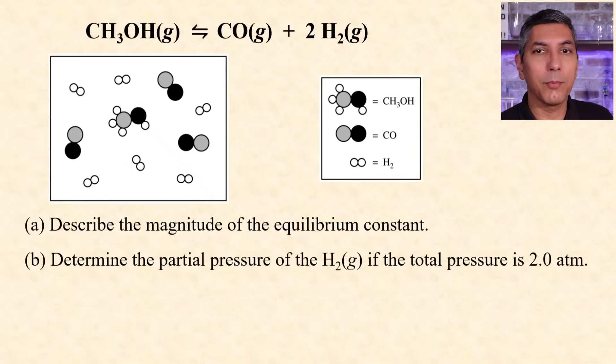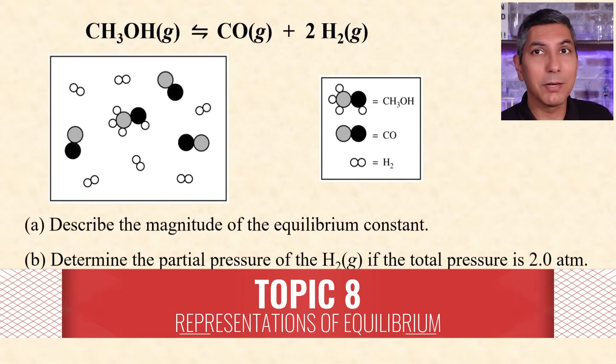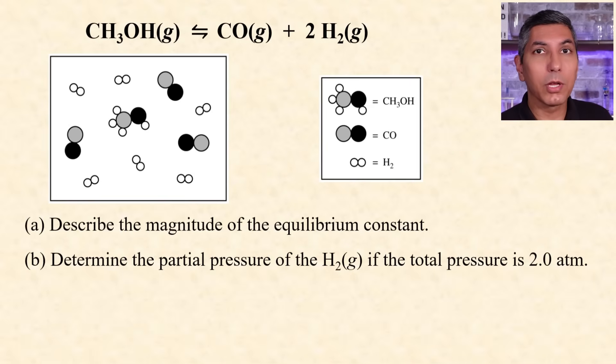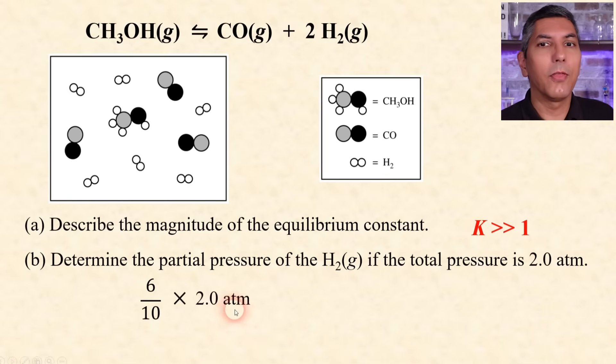We can use a particle diagram to represent the relative numbers of reactants and products in a reversible process. In this example, we're given a particle diagram, and we're asked to describe the equilibrium constant. Well, we see that there are a whole lot more carbon monoxide and hydrogen molecules than there are methanol molecules. And, since there are so many more product molecules than reactants, we'd say the equilibrium constant has a very large value. And, if we're asked to estimate the partial pressure of, say, the hydrogen, we could multiply the mole fraction, which is 6 out of 10, or 6 tenths, by the total pressure. If the total pressure is 2.0 atmospheres, we'd say the partial pressure of the hydrogen gas is 1.2 atmospheres.